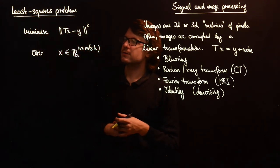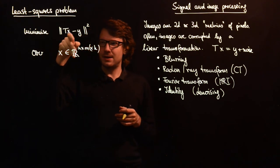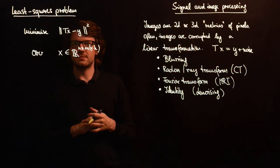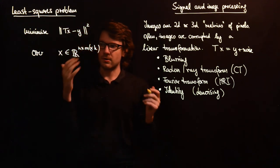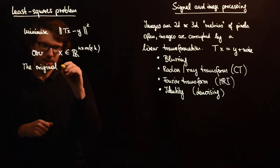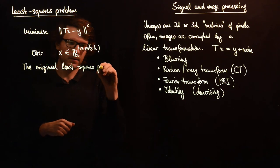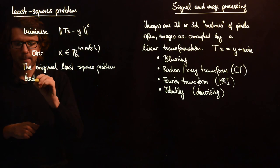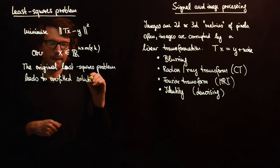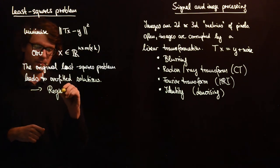The problem is, as I said, if you exactly solve this problem then you run into issues that you get so-called overfitting, that you exactly reconstruct which original image would correspond to the noisy image here and this is not what you want usually. The original least squares problem leads to overfitted solutions.